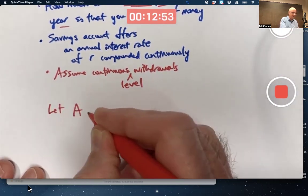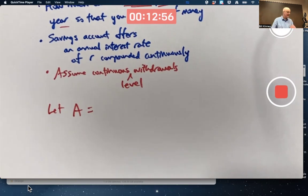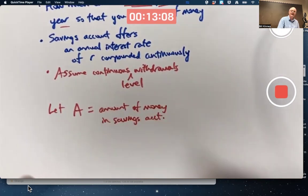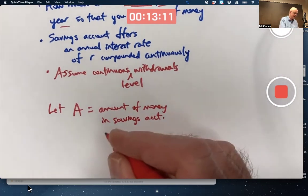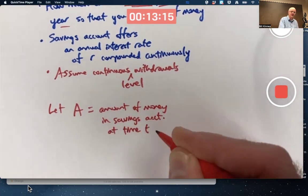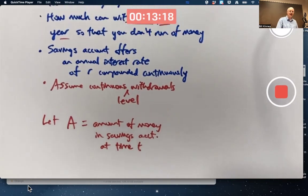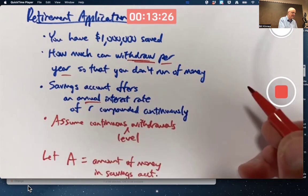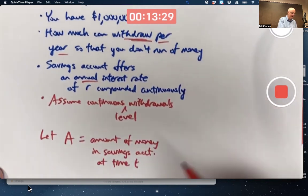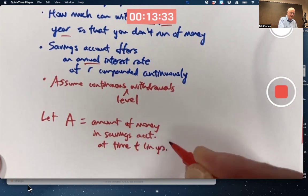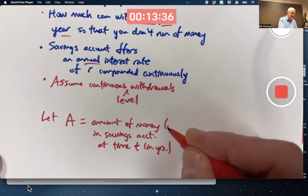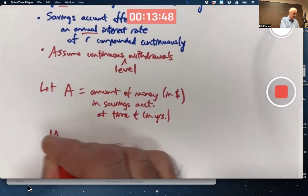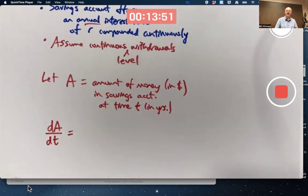Let's let capital A be the amount of money in the savings account at time T. At time T. What would make the most sense to use for T? Well, since R is an annual interest rate and also since we're withdrawing this a certain constant amount per year continuously, it would make sense to say T is in years. It would also make sense to say the amount is in dollars. That's the amount of money. How do we write down a differential equation giving us the rate of change of that money with respect to time?